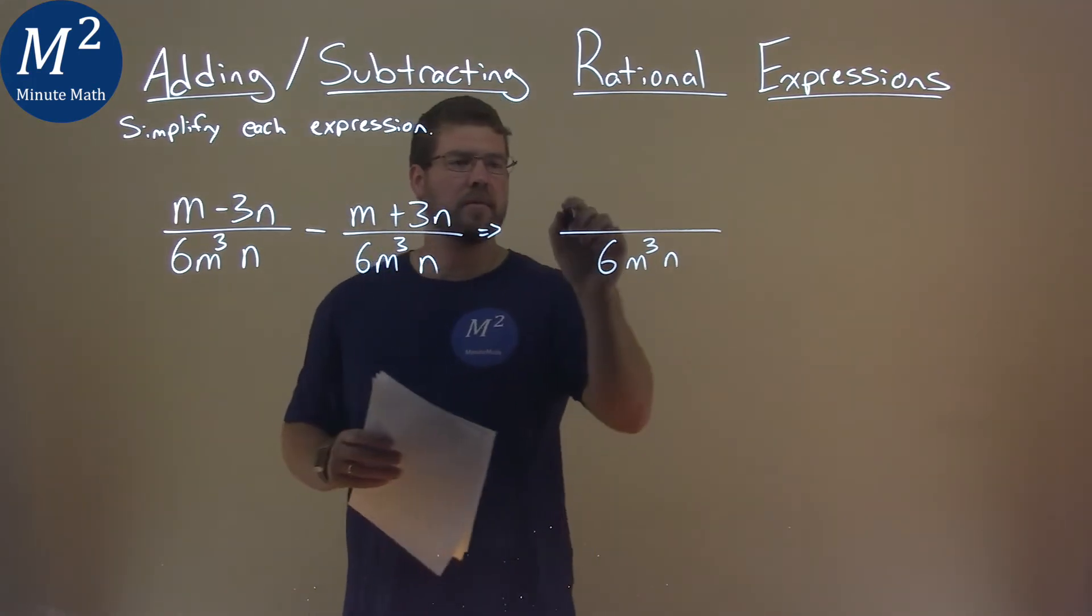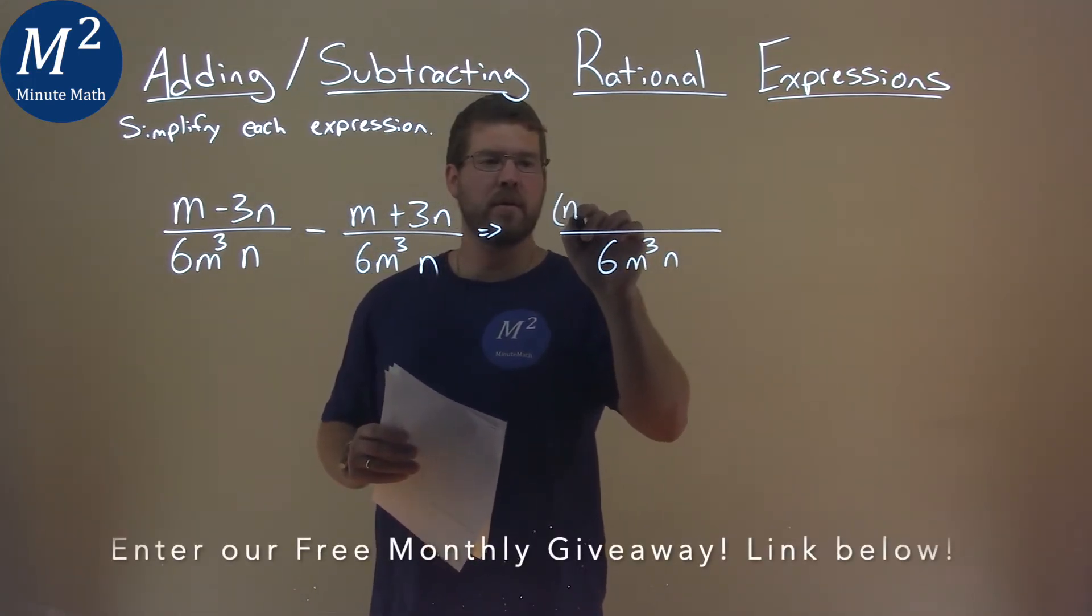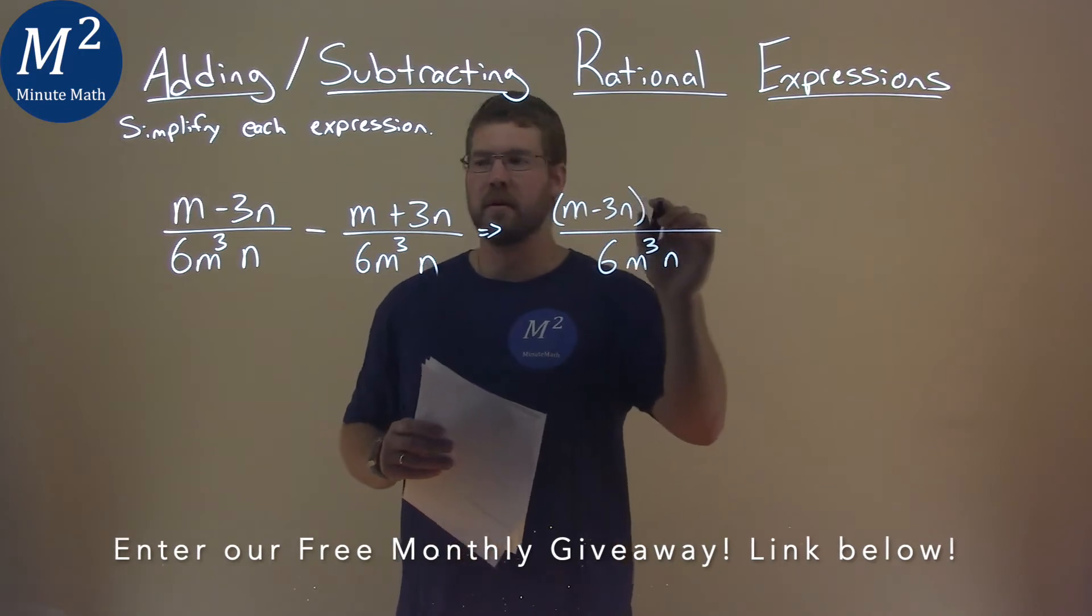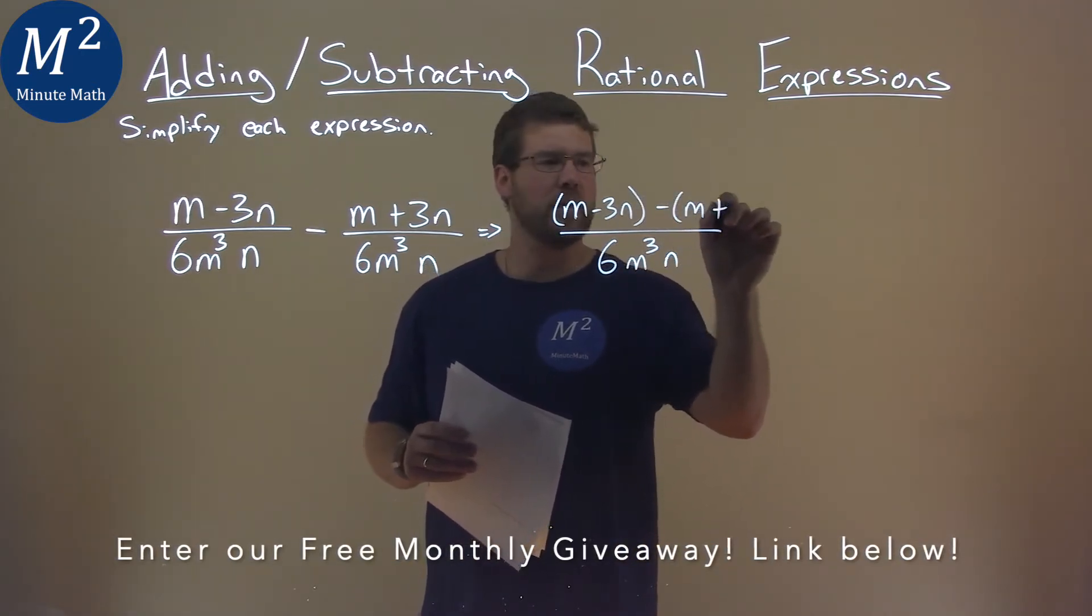The numerator, we're just going to subtract the two, so let's write it out here as m minus 3n minus m plus 3n.